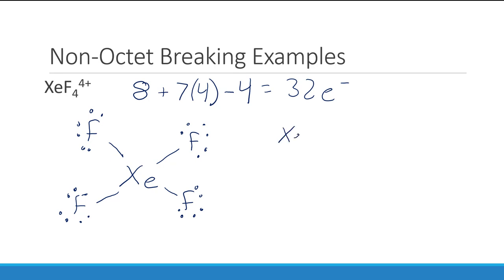Everything has an octet, and so this should be all set and good to go. We can count our formal charges. Xe came in with eight electrons. It only has four now—one from each bond—which gives it a formal charge of plus four, is not particularly ideal.